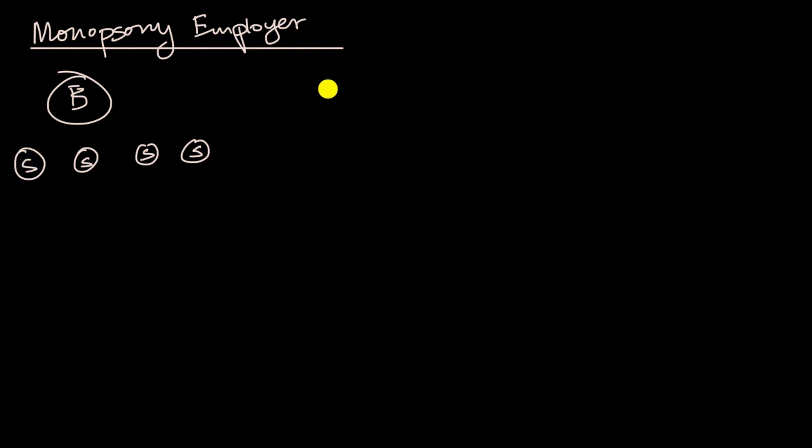We have already studied monopsony employers' situations before, but I will redo it. It never hurts to get the practice. In the vertical axis, you have the wage, which is really the price of this factor of labor that we're studying right now. And in the horizontal axis, you have the quantity of the factor that we care about. And this is quantity of labor.